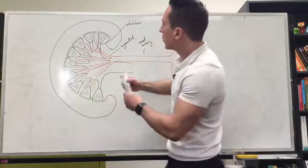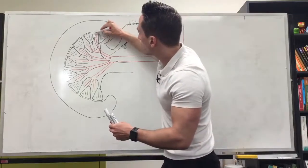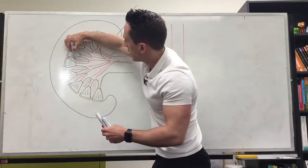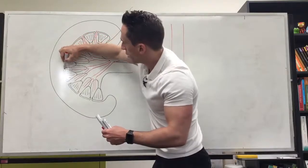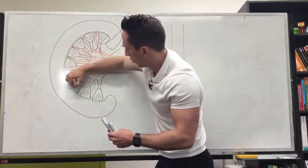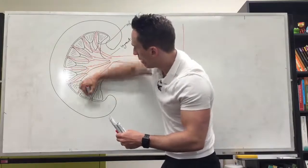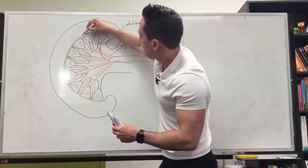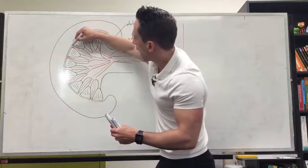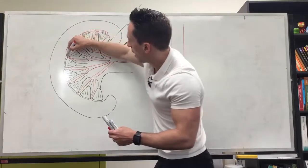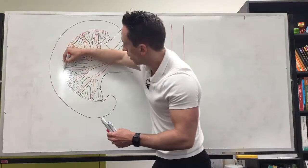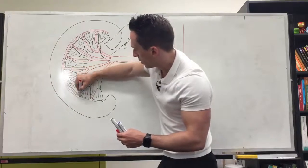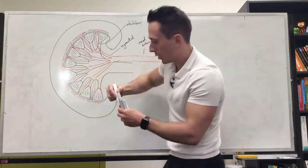The interlobar branches travel between the renal pyramids up towards the base of the renal pyramids, heading towards the cortex. As they get there, they give off multiple branches that turn at a right angle and run along the base of the renal pyramids. These are now called arcuate arteries — arcuate referring to the fact that they've just turned a corner.